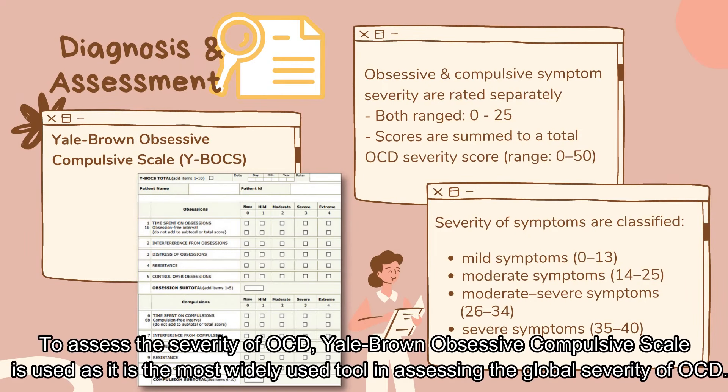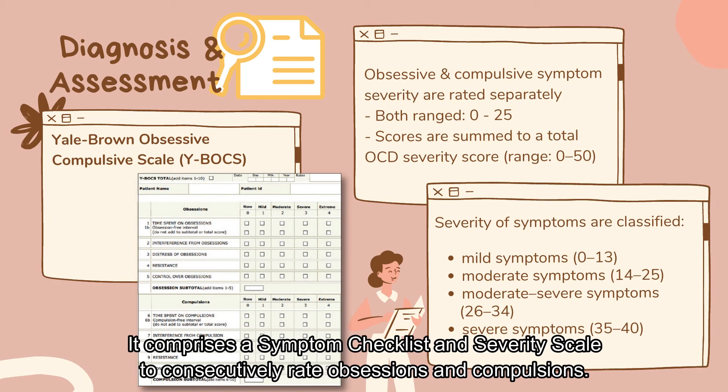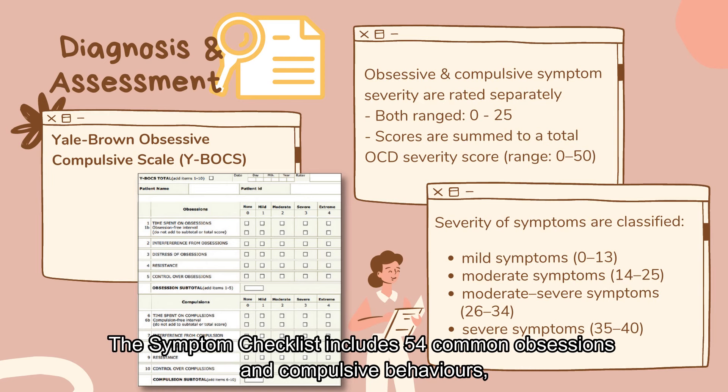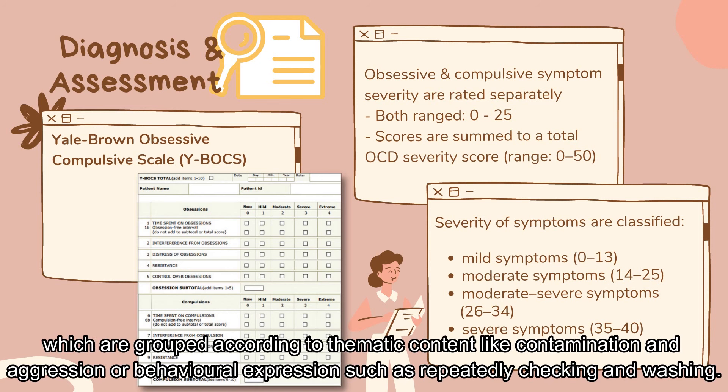To assess the severity of OCD, the Yale-Brown Obsessive Compulsive Scale is used as it is the most widely used tool in assessing the global severity of OCD. It comprises symptom checklists and severity scales to consecutively rate obsessions and compulsions. The symptom checklist includes 55 common obsessions and compulsive behaviours, which are grouped according to thematic content like contamination and aggression.